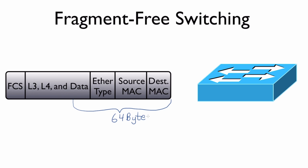Because most collisions occur in the first 64 bytes, if it doesn't see that a collision has occurred in the first 64 bytes, it has some assurance that this is probably an okay frame. We didn't wait for the frame check sequence to arrive and perform a calculation, so we're not being as thorough as store-and-forward switching, but we have more assurance that the frame is valid compared to cut-through switching.